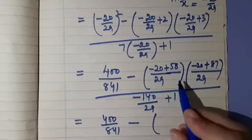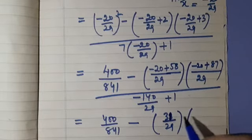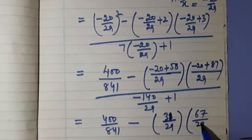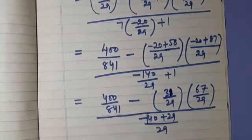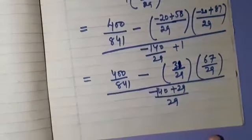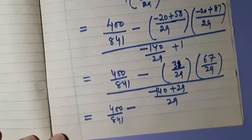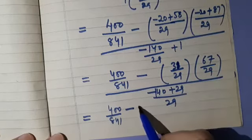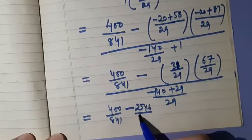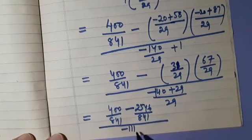So this is equal to 400 upon 841, minus: minus 20 plus 58 gives us 38, denominator 29; minus 20 plus 87 gives 67, so 67 by 29. In the denominator: minus 140 plus 29 divided by 29. Multiplying 38 by 67 we get 2546; 29 squared we already have as 841. Minus 140 plus 29 is minus 111, upon 29.